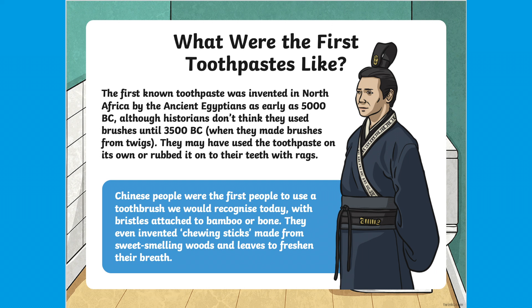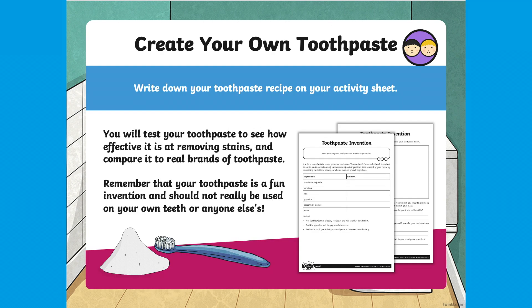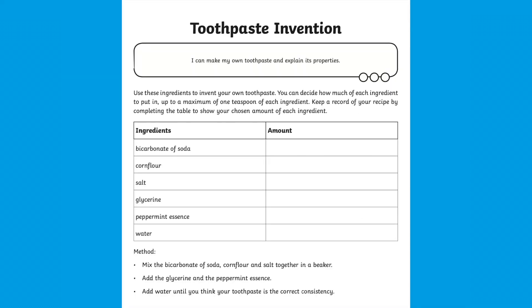For example, did you know that the first known toothpaste was in fact invented in North Africa by the ancient Egyptians as early as 5000 BC? Children will also have the opportunity to carry out some science investigations, such as this brilliant create your own toothpaste activity using everyday ingredients such as bicarbonate of soda, corn flour and salt. They will then test the toothpaste to see how effective it is at removing stains — of course with a reminder that it's not to be tested on your own teeth.